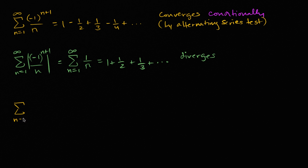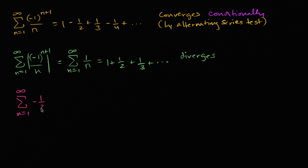Let's look at an example of that — let's do a geometric series. Let's take the sum from n equals one to infinity of negative one-half to the n plus one power. This is a geometric series where the absolute value of our common ratio is less than one, so we know that this converges.